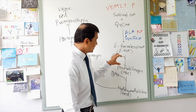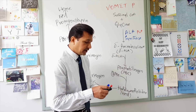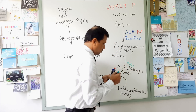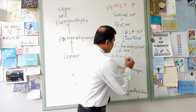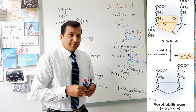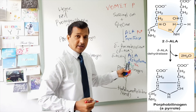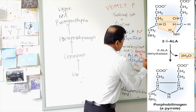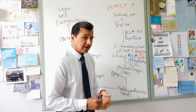Once you get delta-aminolevulinate, two molecules of delta-aminolevulinate will condense with one another, releasing water, in a dehydration reaction to make porphobilinogen. This job is done by an enzyme called ALA dehydratase. ALA dehydratase is a zinc-containing enzyme and is sensitive to lead — meaning lead toxicity will decrease the activity of ALA dehydratase.